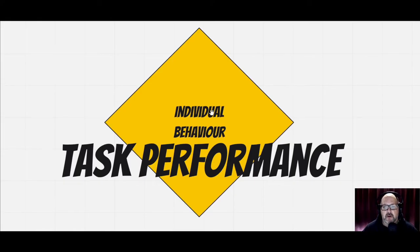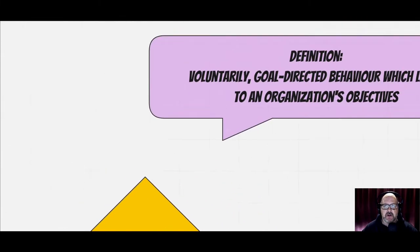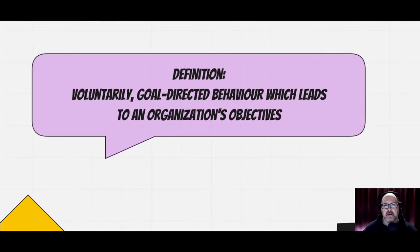Hey, welcome to another YouTube tutorial for organizational behavior. This one is on individual behavior and we're going to be talking about task performance today. I just wanted to give a small definition of what that means. When we're talking about individual behavior and task performance, we're really talking about voluntary goal-directed behavior which leads to an organization's objectives.